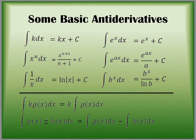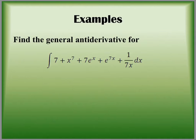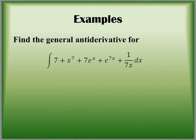Here's an example on your handout: find the anti-derivative of 7 + x^7 + 7e^x + e^(7x) + 1/(7x). I tried to get all the rules into the same problem — lots of 7s! Go ahead and take your best stab at all those pieces, and we'll check to make sure you've remembered all the details correctly, which I imagine mostly you will have since we've been doing this recently.